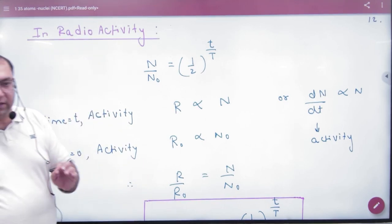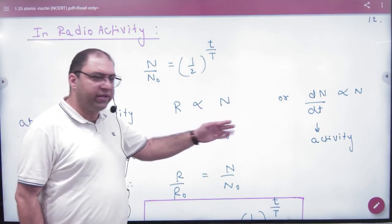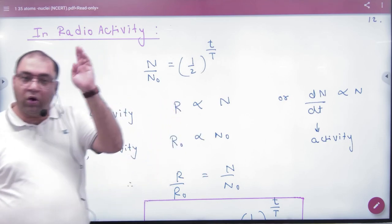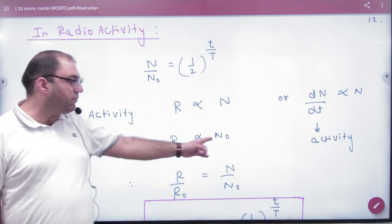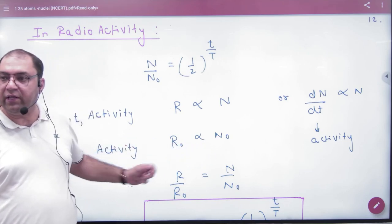If my number of atoms is now N, then my activity is R. But a lot of time before, at time t equals 0, what was the number of atoms? N₀. Then my activity is R₀.